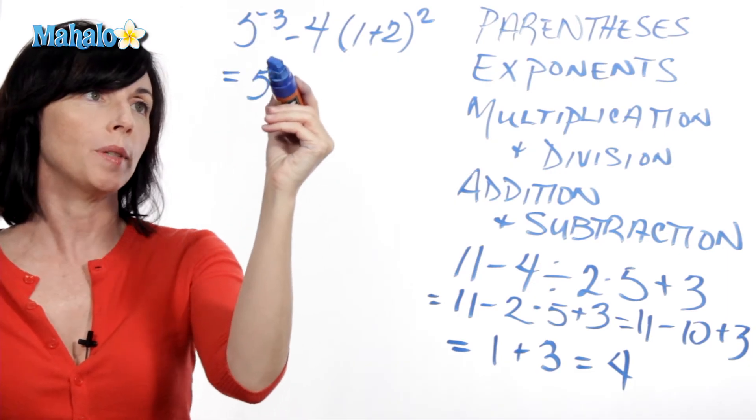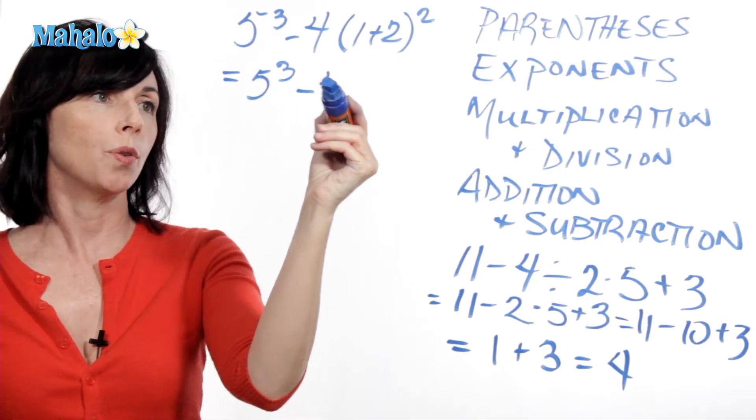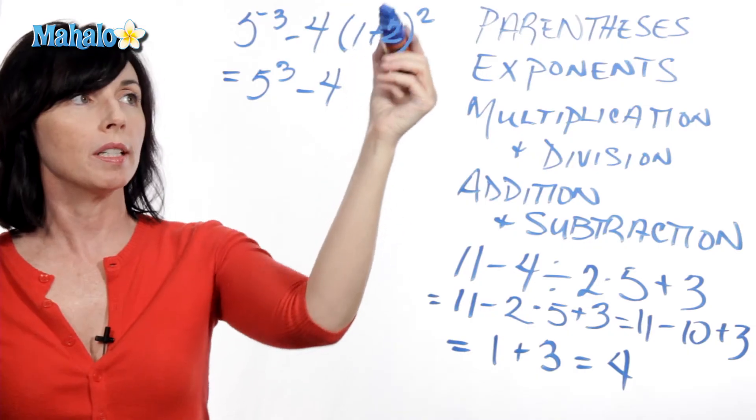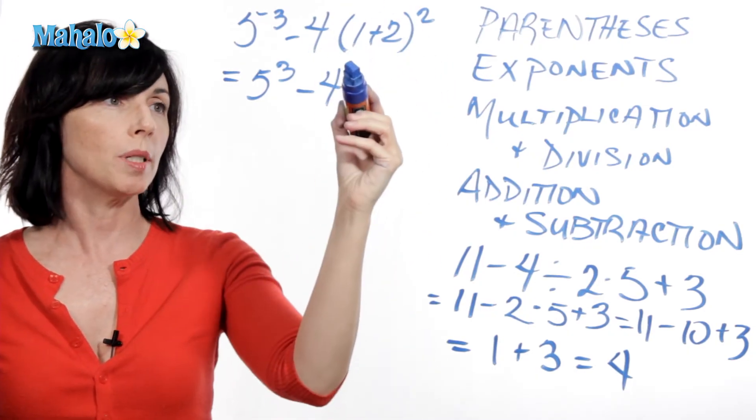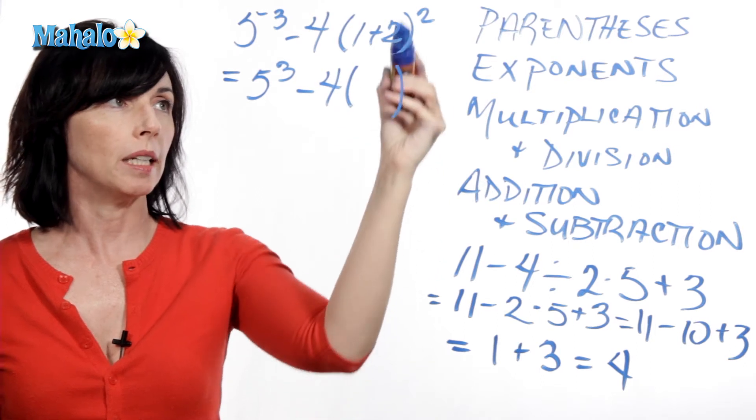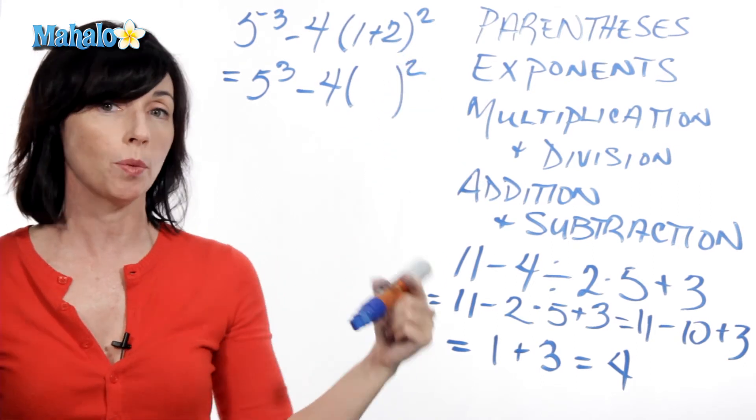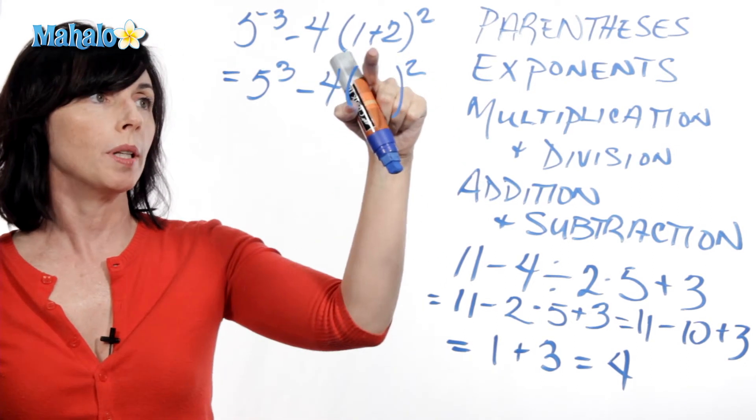So I'm going to leave my 5 cubed as it is, minus 4. Now, parentheses here are also just being used as another form of multiplication. So I'm just going to keep them, and I'm going to keep the squared, but I want to simplify what's inside of them. 1 plus 2 is 3.